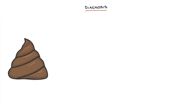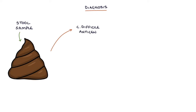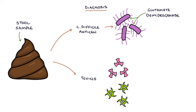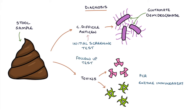Let's talk about the diagnosis. Diagnosis is based on stool samples. A stool sample can be tested for the C. difficile antigen, specifically glutamate dehydrogenase, and the A and B toxins by PCR or enzyme immunoassay. The antigen test shows whether C. difficile is present but not whether it's producing toxins. The antigen is the initial screening test and is followed up with tests for the toxins if C. difficile is identified.